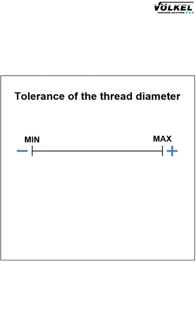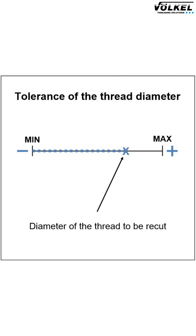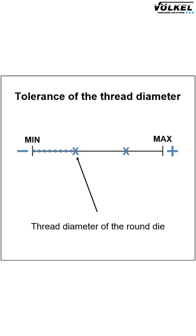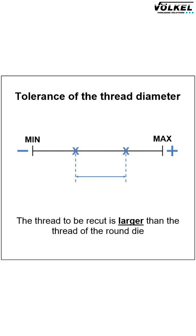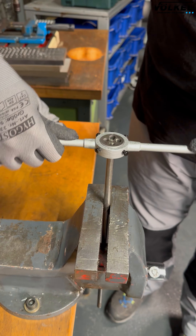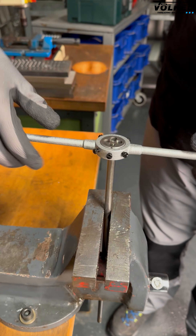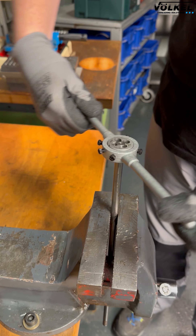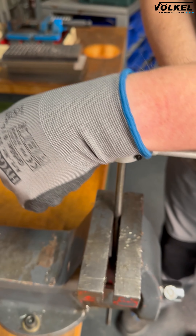The exact opposite occurs when the thread to be recut is larger within the tolerances than the thread of the die. In this application situation, chip removal occurs in the thread during the recutting process. The greater the difference between the die and the thread to be recut, the more chips are produced. Particularly when recutting larger thread diameters, greater force can be applied.